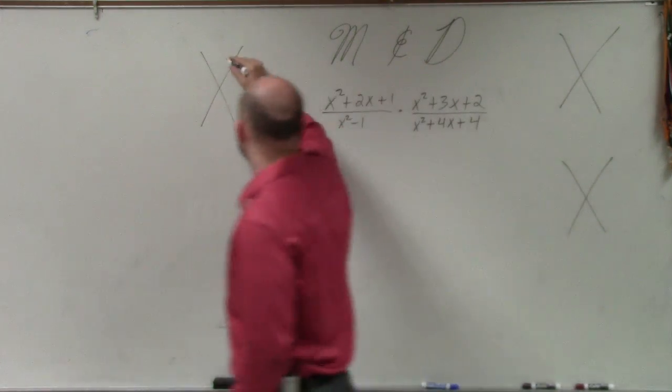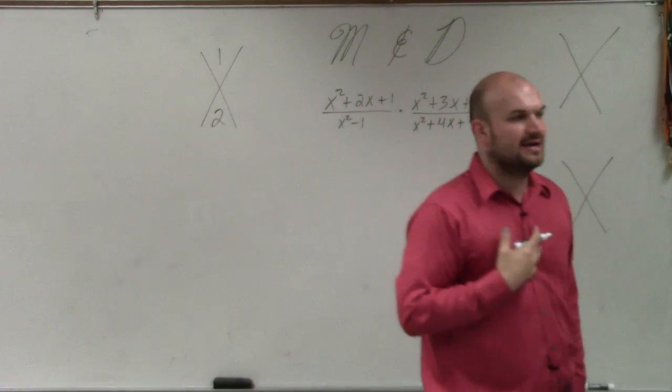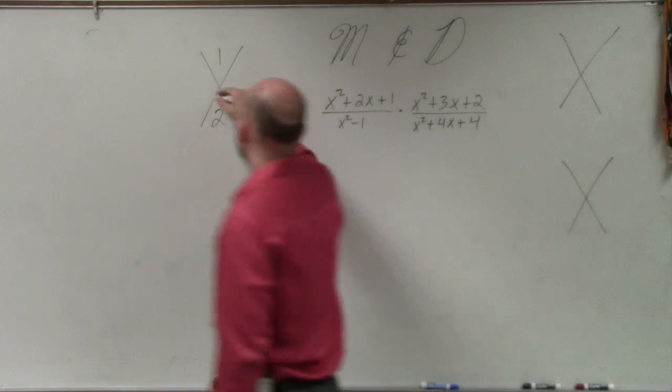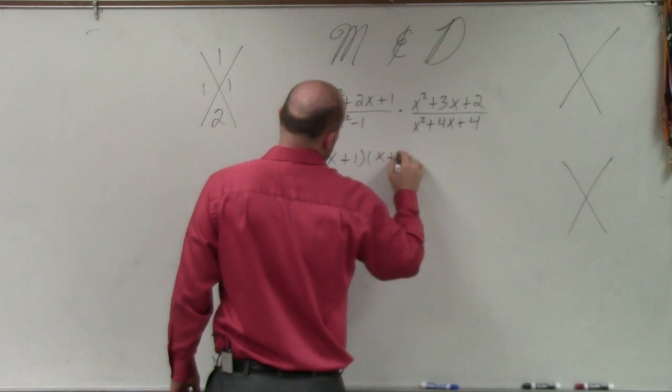So in this upper left-hand corner, I remember I do a times c and 2. What two numbers multiply to give me 1 and add to give me 2? Well, that one's pretty obvious, right? 1 and 1. So I can factor this as x plus 1 times x plus 1.